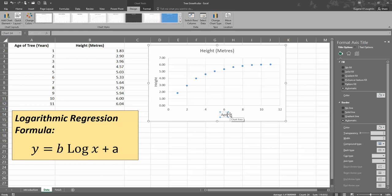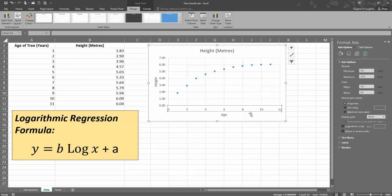I also want to change the format of the x-axis here. You can see it's in increments of 2, 4, 6. I just want this to show all the increments.